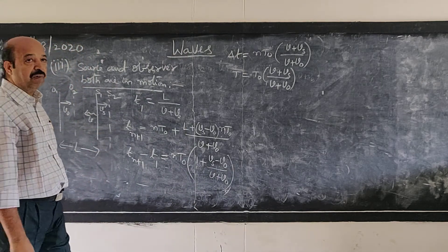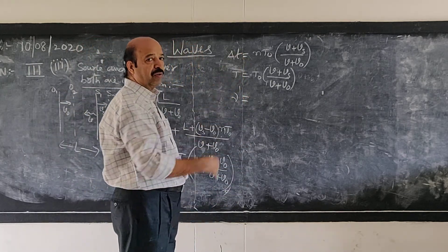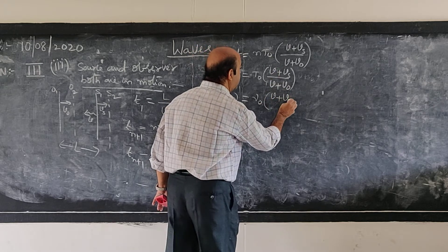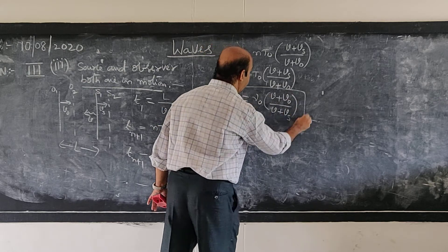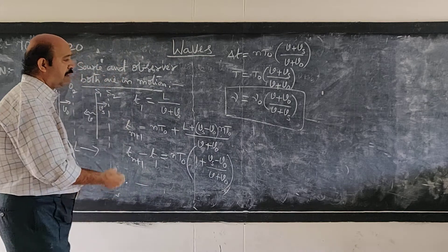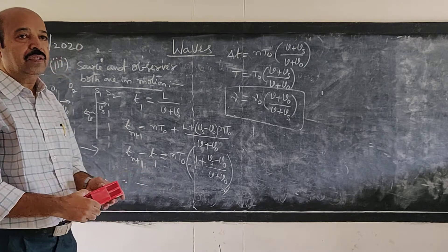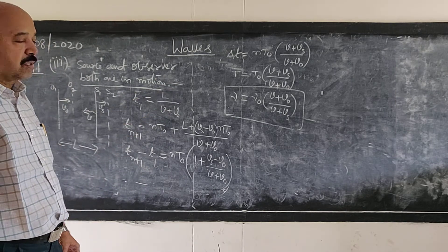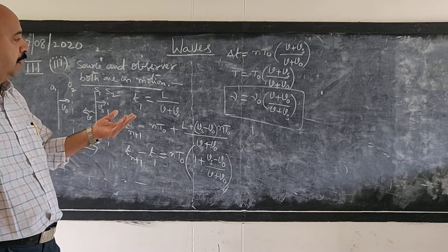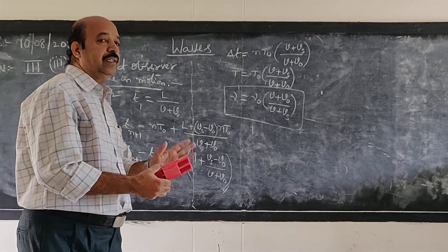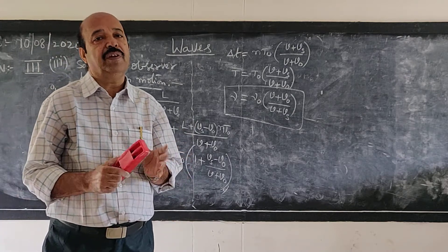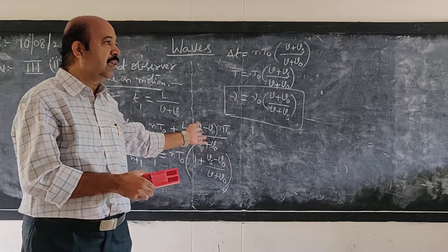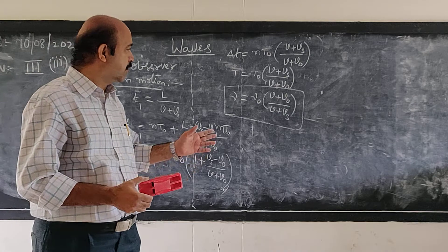Therefore the apparent frequency, which is the reciprocal of the apparent time period, is μ' = μ0 × (V + V0) / (V + Vs). This is the general equation for apparent frequency when both the source and observer are in motion. You have to change the signs for the observer's speed or the source's speed depending upon the direction of motion.